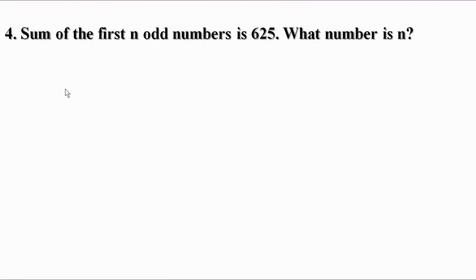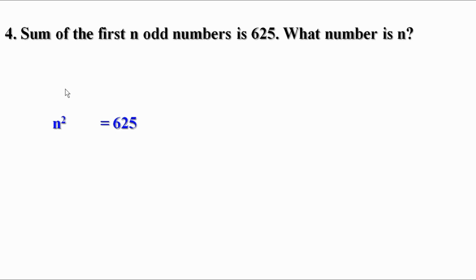Fourth question. The sum of the first n odd numbers is 625. What number is n? We know the sum of the first n odd numbers is n squared. Therefore, we can write n squared equal to 625. Then n equals the square root of 625, which is equal to 25. That means the sum of the first 25 odd numbers is 625.